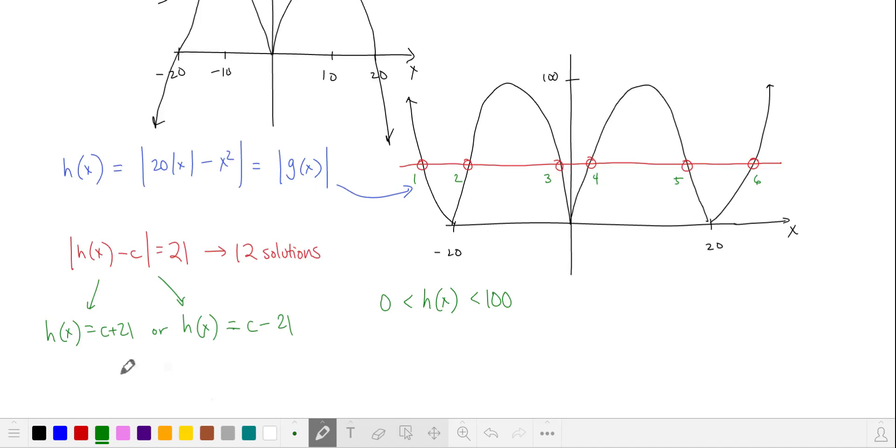From our absolute value, we have h of x is equal to c plus 21, or h of x is equal to c minus 21.